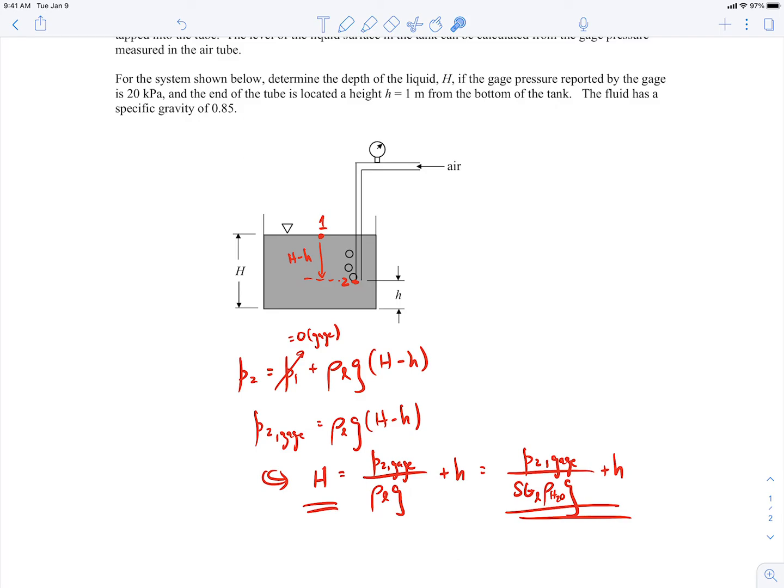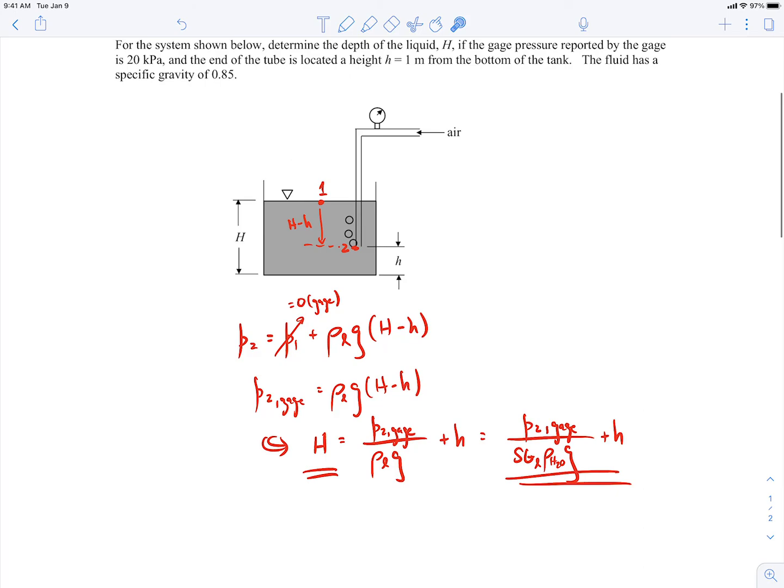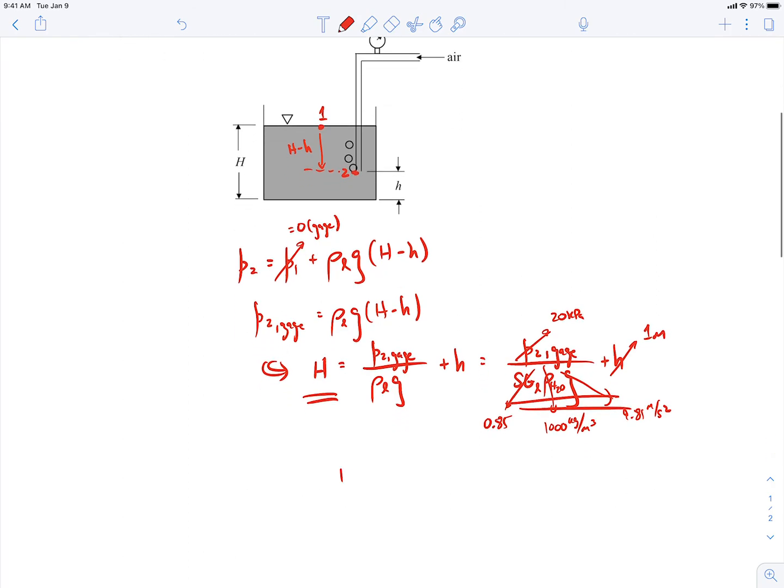So if we use the numbers that are given, we're told that the gauge pressure is 20 kilopascals, the height here is 1 meter, the fluid has a specific gravity of 0.85, density of water is 1000 kg/m³, and gravity is 9.81 m/s². We can plug in those numbers.